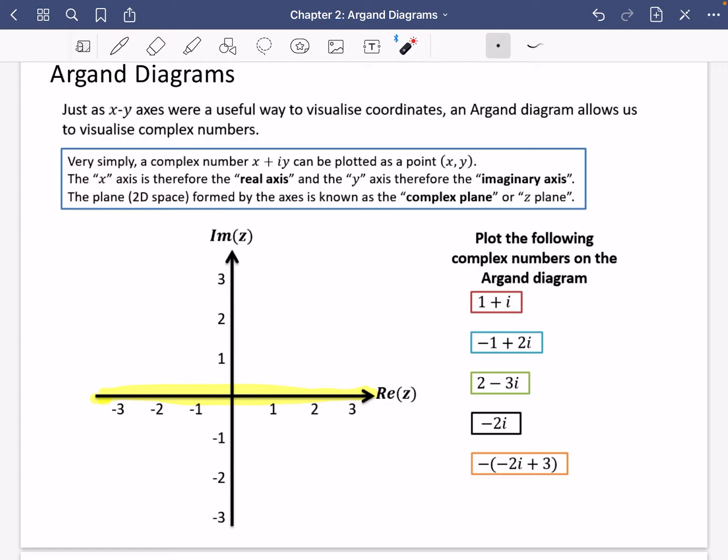What this allows us to do is to take a complex number, which is a mixture of a real number and imaginary number, and plot them as a coordinate in two-dimensional space. And suddenly you get some really interesting properties that happen here.